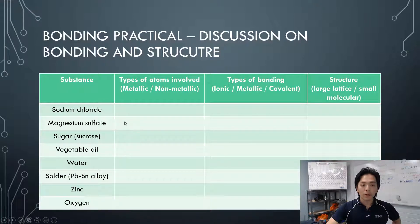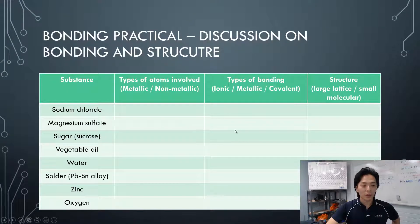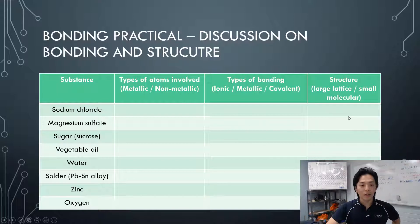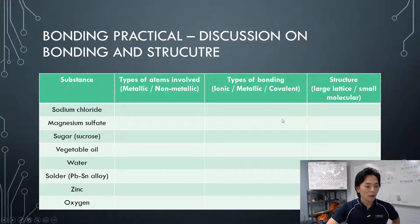Next one: magnesium sulphide. Both metal and non-metal atoms are involved. Type of bonding is ionic, and the structure is an ionic lattice — same as sodium chloride.